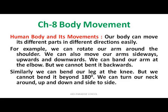Our body can move its different parts in different directions easily. For example, we can rotate our arm around the shoulder. We can also move our arm sideways, upward, and downward. We can bend our arm at the elbow, but we cannot bend it backwards.